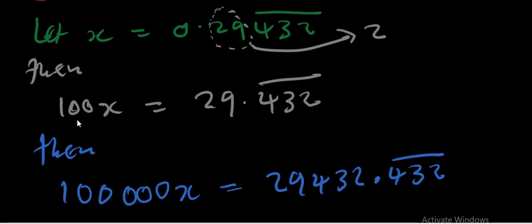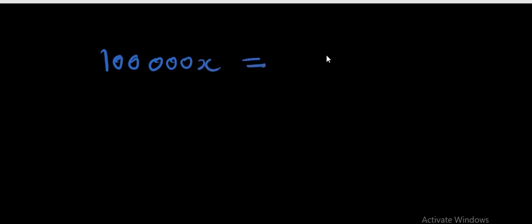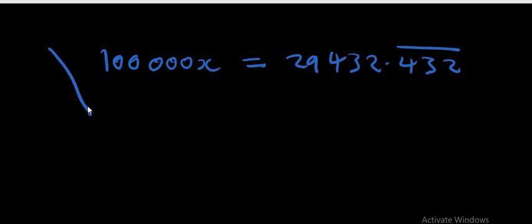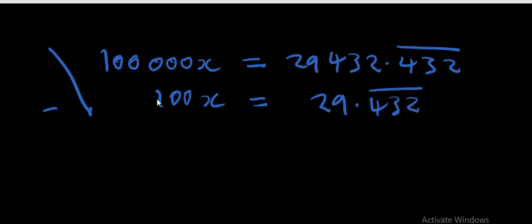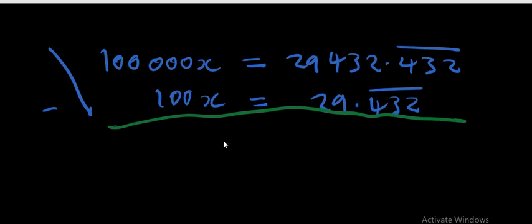Here is where confusion comes in. Most students would pick the wrong pair of equations to subtract. The correct pair to use is 100,000X = 29432.432̄ minus 100X = 29.432̄. When we subtract, we get 99,900X equals the difference on the other side.